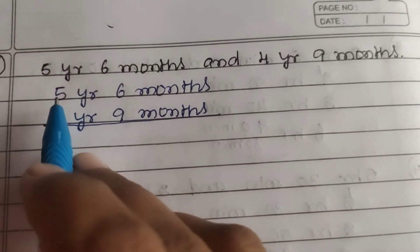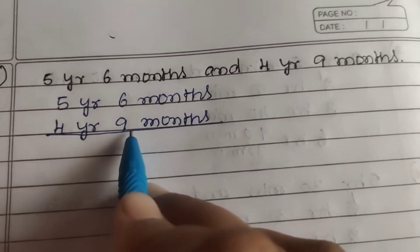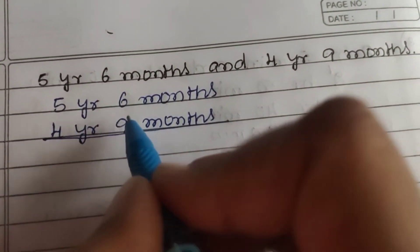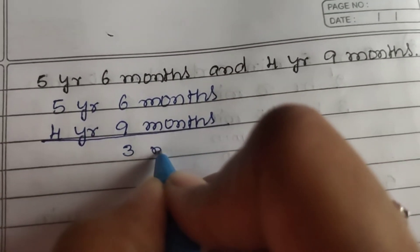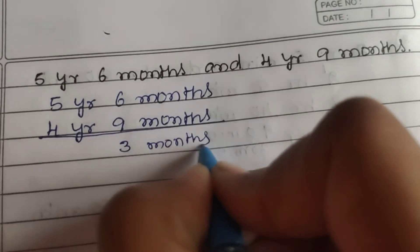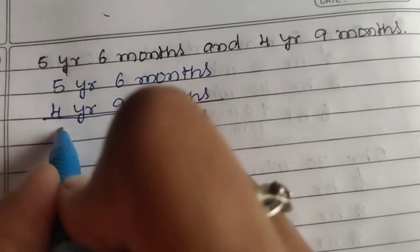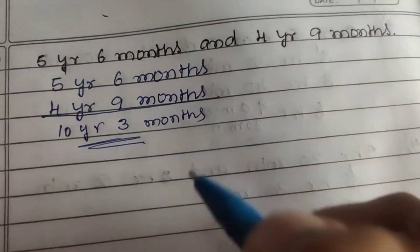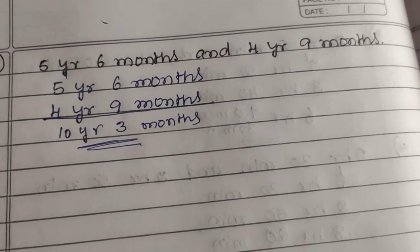Last question: 5 years 6 months and 4 years 9 months. 6 plus 9 is 15 — again 3 months remain, carry 1. 1 plus 5 is 6, 6 plus 4 is 10. The answer is 10 years 3 months. This completes exercise 7.2. See you in the next class. Thank you.